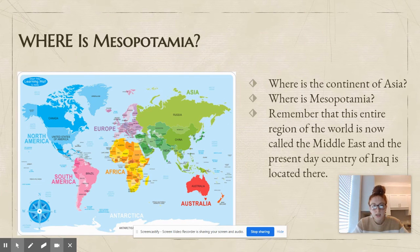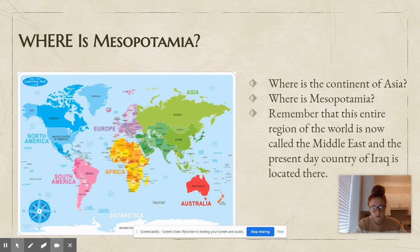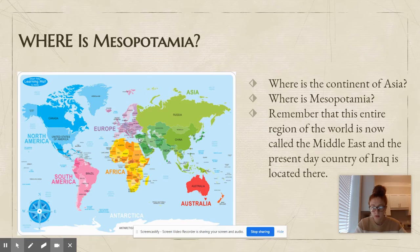All right, let's review. Where is Mesopotamia? Who can tell me what color is the continent of Asia? Asia is all of the green on the map. And where is Mesopotamia? It's in the Middle East — the darker green area. Mesopotamia is right here, in what we now call Iraq.